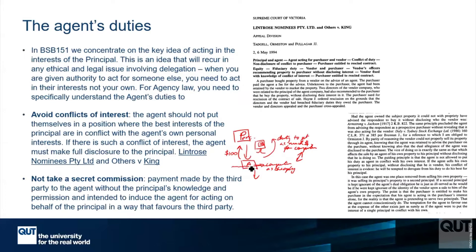What we have is a conflict between the interests of the agent and the interests of the principal. If the agent really did want to buy the computer, they would need to tell the principal that's what they're doing, so the principal knows the interests aren't aligned and can negotiate accordingly. But if they bought it without telling them and just said 'I got $100 for it,' that's clearly a conflict of interest and a problem.